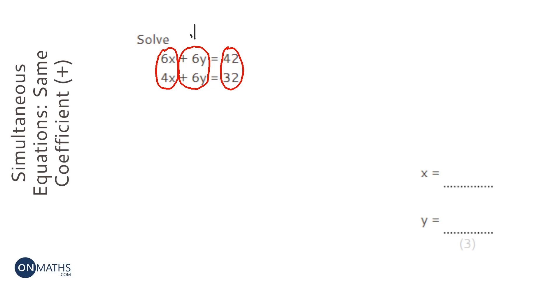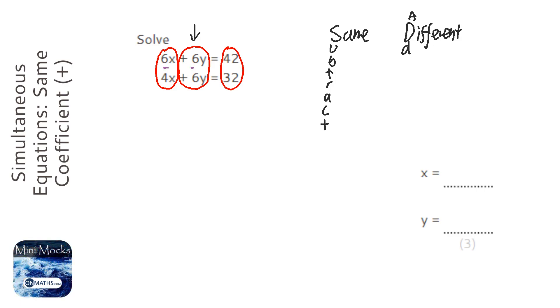Now when they are the same, the numbers, and we ignore the signs, but they are both positive as well, we think right if they're the same signs we subtract, but if they're different signs we add. Because they're the same signs, we're going to subtract as we go along.